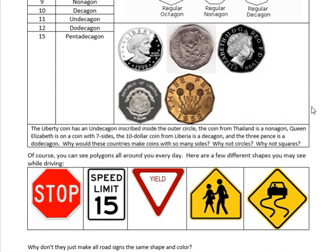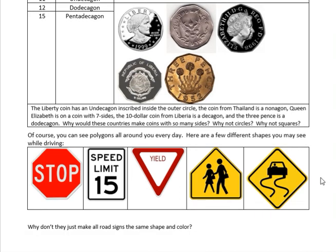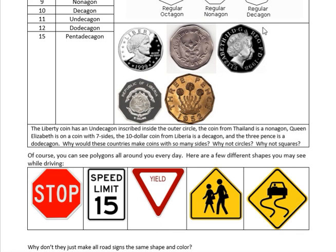You can see polygons all around you every day. Here are a few shapes you might see while driving: an octagon for a stop sign, a rectangle for a speed limit sign, a triangle for a yield sign, a pentagon for a school crossing sign, and a square rotated on its end for a hazardous road conditions sign. Why not make all road signs the same shape and color? Because this way, a stop sign is always recognizable by its shape and color — so even if somebody couldn't read, that shape and color would tell them to stop. The same goes for yellow caution or slow-down signs. The color has meaning too, but so do the shapes.